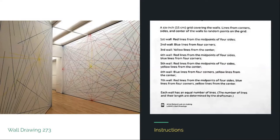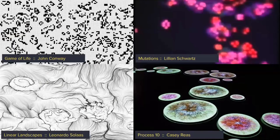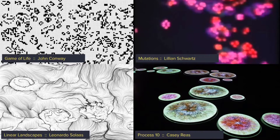He influenced a lot of people and artists — for example, John Conway, Leland Schwartz, Leonardo Solaas, and Casey Reas, among many others. These artists also work with concepts like cellular automata, autonomous agents, and rule-based simulations. They work with the idea that both the artist and the computer work together to create the final product. So the agency of the artwork is a co-authoring between the algorithm and the artist.